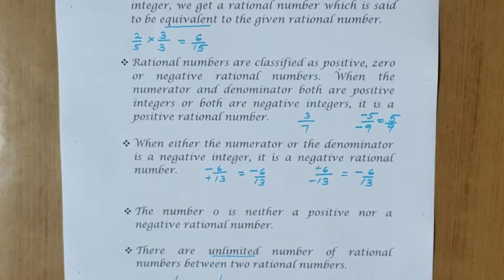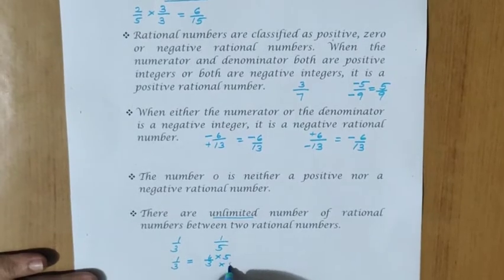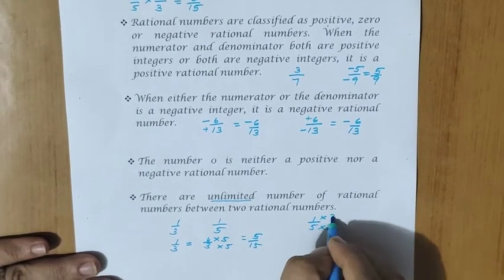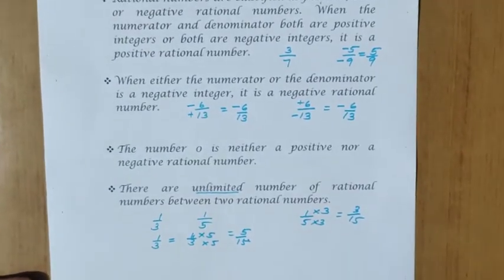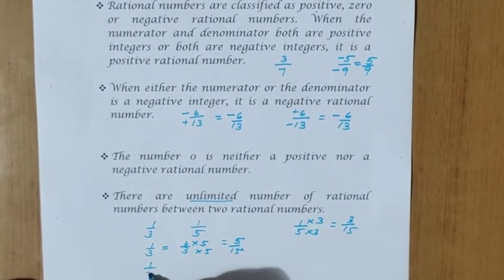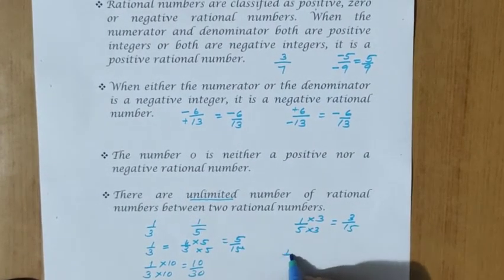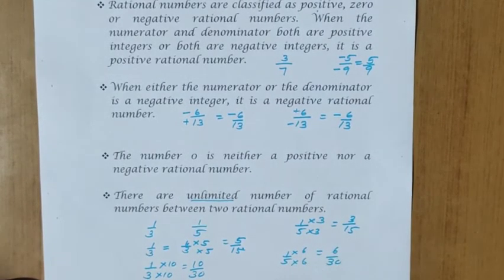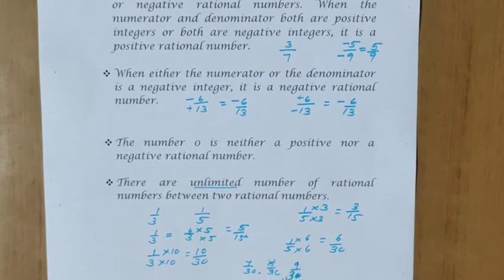1 by 3 multiplied by 5 over 5 gives 5 by 15, and 1 by 5 multiplied by 3 over 3 gives 3 by 15. Between 3 by 15 and 5 by 15, only 4 by 15 is possible. But if we change the denominator to 30 — making them 10 by 30 and 6 by 30 — then 7 by 30, 8 by 30, 9 by 30 and more are all possible. Using equivalent rational numbers, we can find many rational numbers between any two.